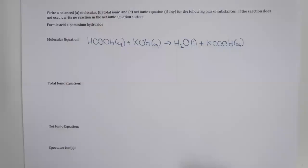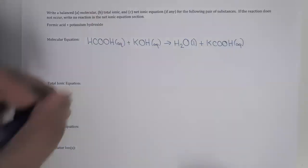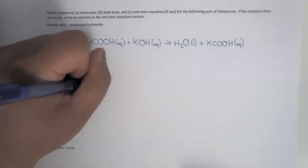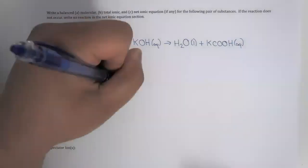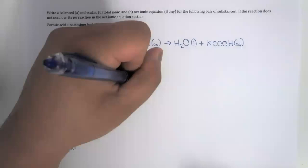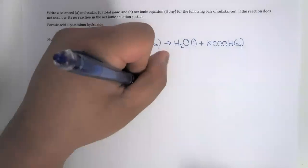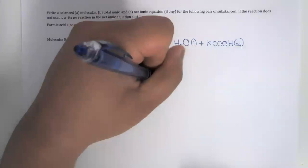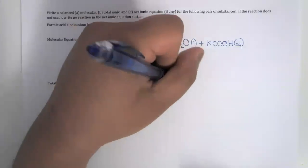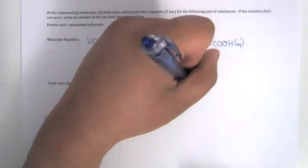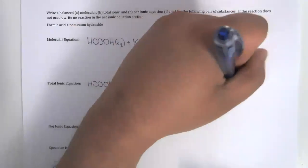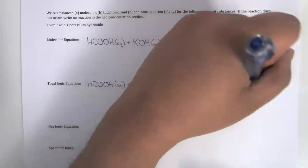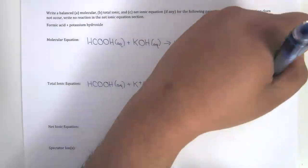The total ionic equation is HCOOH, or formic acid, plus potassium ions, plus hydroxide ion, forms potassium ion, plus formate ion, plus liquid water.